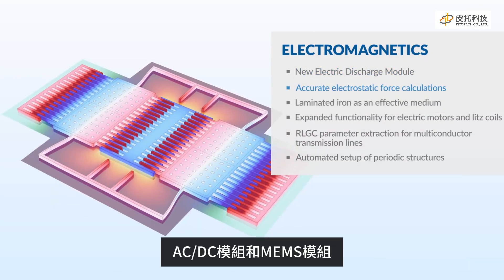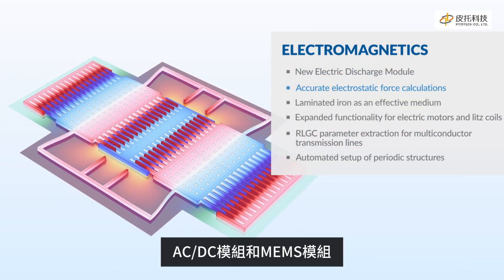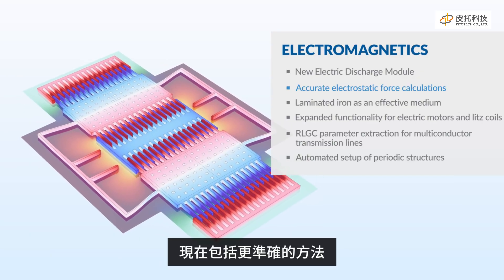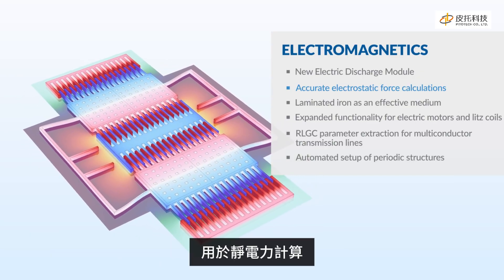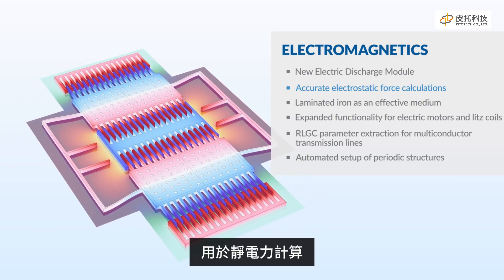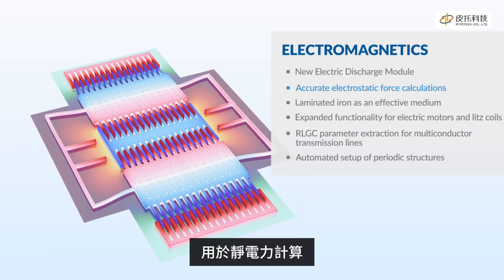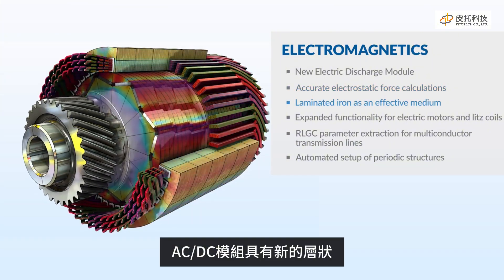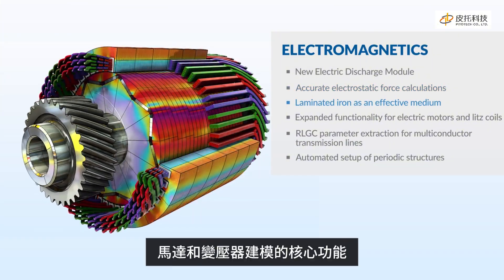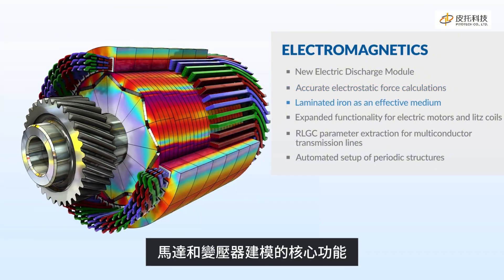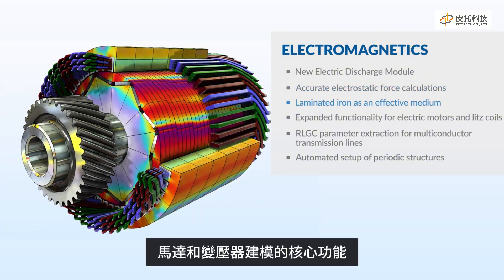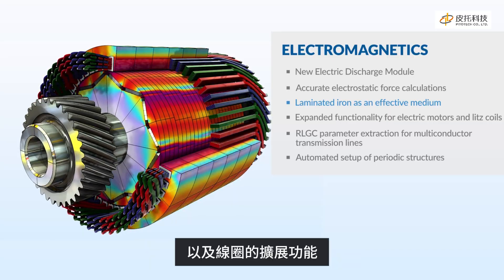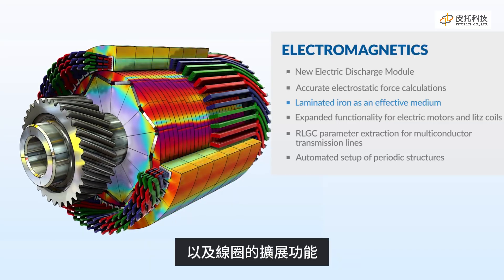The ACDC module and the MEMS module now include a more accurate method for electrostatic force calculations, and the ACDC module features a new laminated core feature for motor and transformer modeling, as well as expanded functionality for coils.